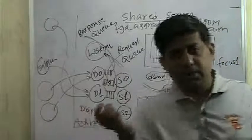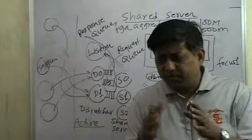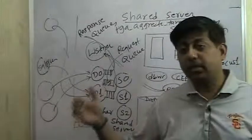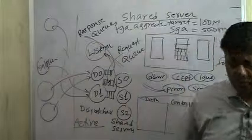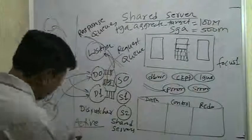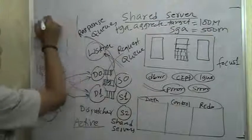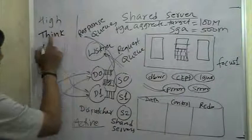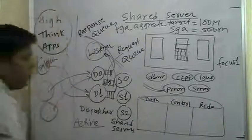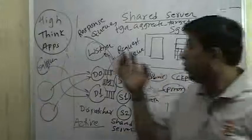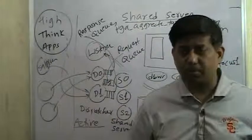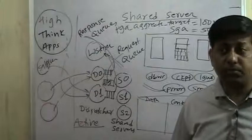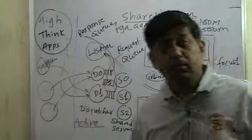Shared server is implemented only for high-think applications - like a banking application with 10,000 users. When we do online banking for 10 minutes, we execute maybe five or six SQL statements in total, spending most of the time thinking. Those applications are prime candidates for shared server - applications where users require a lot of thinking time and less active time.